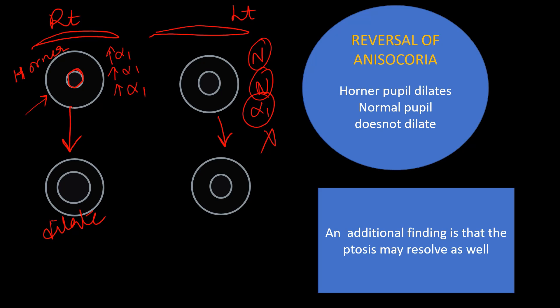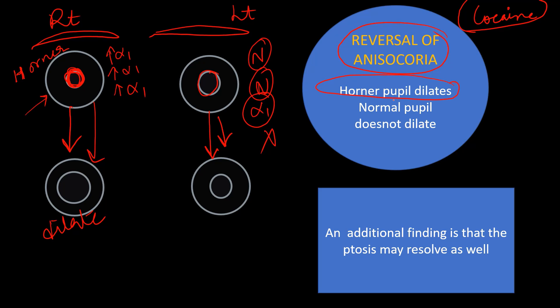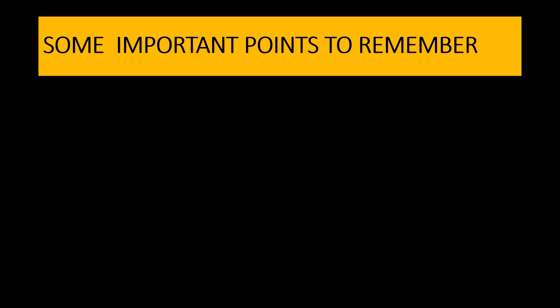After apraclonidine instillation, the Horner pupil — which was smaller — becomes larger, while the normal pupil remains the same size. This is a reversal of anisocoria. In the cocaine test we saw exaggeration of anisocoria, but in the apraclonidine test we see reversal of anisocoria. An additional finding is that the ptosis may also resolve with apraclonidine.